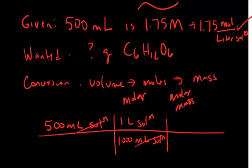So we can use the molarity to convert to moles of solute. So we know how much solution we have. We can get into moles of solute through the desired concentration. So that's going to be 1.75 moles of glucose, C6H12O6, per 1 liter of glucose solution.